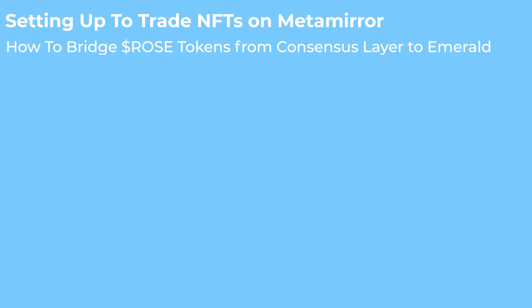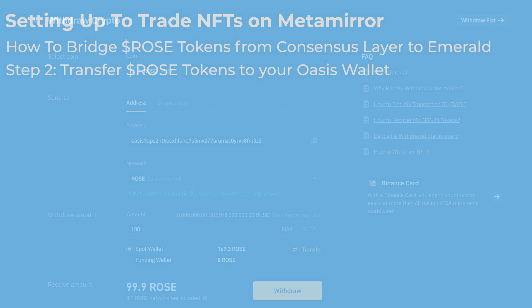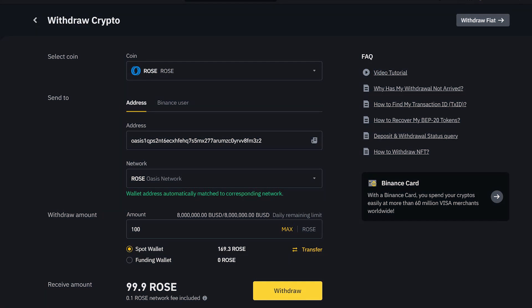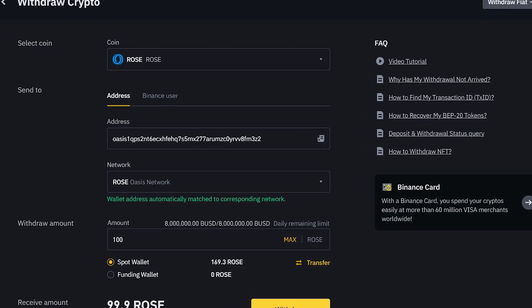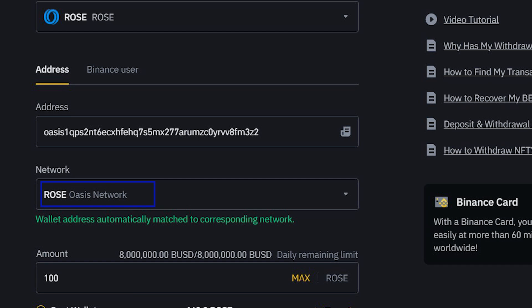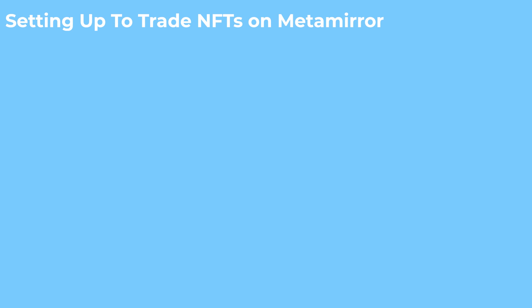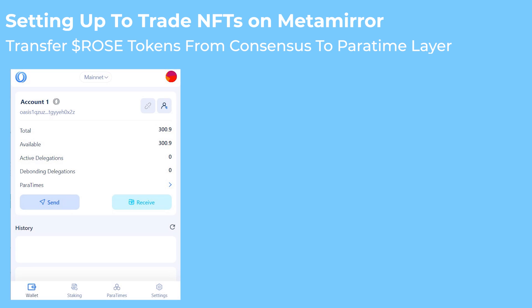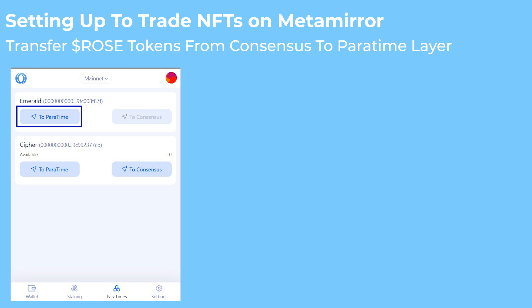Step 2: Transfer ROSE tokens from an exchange like Binance or CoolCoin to the Oasis wallet address. Note that the network to use for this transfer is Oasis protocol. Step 3: Once your wallet is loaded with tokens, click on the Paratimes tab and then click to Paratime under the Emerald section.